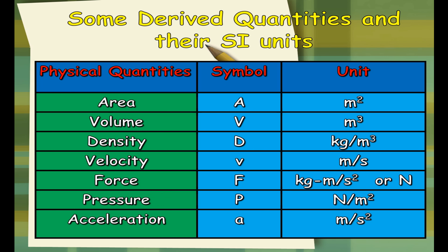Here are some of the derived quantities and their SI units of measurement. These are based on the fundamental quantities — derived quantities can be solved using formulas. Examples include: area with a unit of m²; volume, m³; density, kg/m³; velocity, m/s; force, kg·m/s² or newton; pressure, N/m²; and acceleration, m/s².